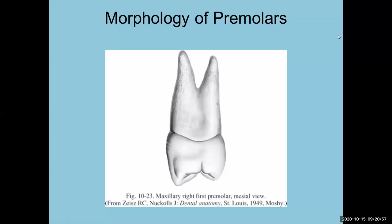Let's start talking about premolars. Take a look at this picture — maxillary right first premolar, mesial view. What do we know about premolars from previous chapters? We can identify whether this is a first or second, maxillary or mandibular, and whether it's a mesial or distal view. What are the standout characteristics you see right now?